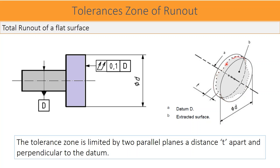The drawing call out is for total run out of a planar surface with respect to datum axis, i.e. datum D. The tolerance feature plane is perpendicular to datum axis D. The tolerance zone of 0.1 mm is limited by two parallel planes, a distance 0.1 mm apart and perpendicular to datum axis D. When datum D is rotated, each element on the tolerance feature must be within the parallel plane boundaries of 0.1 mm.